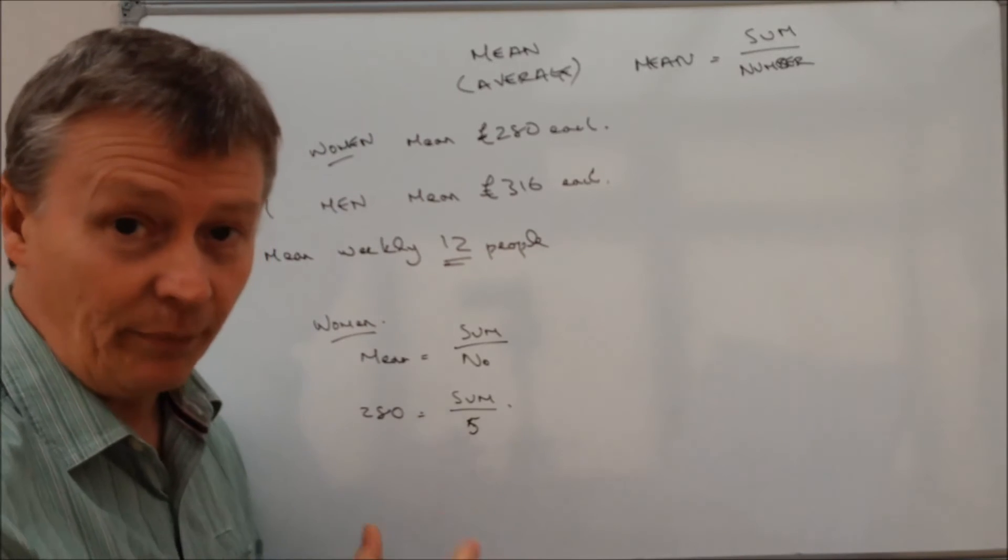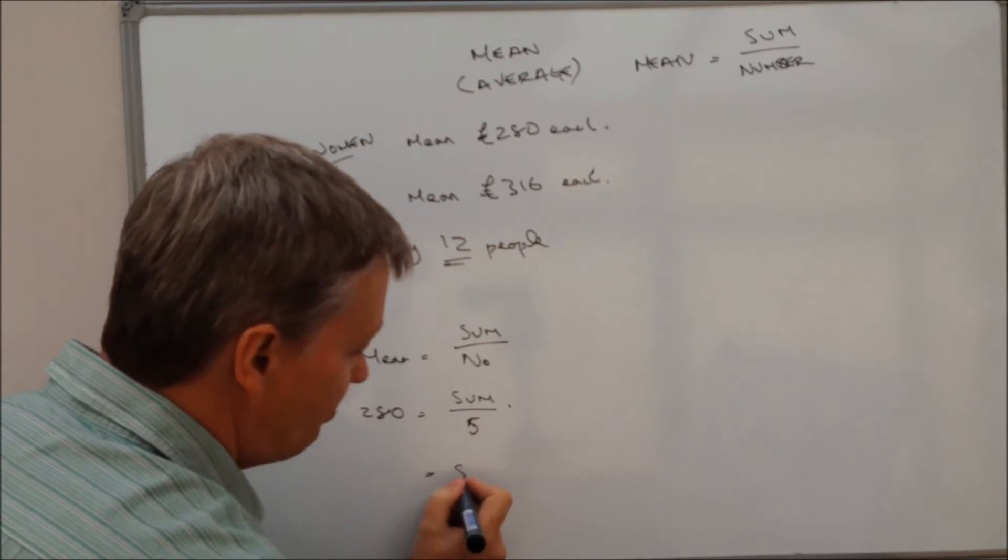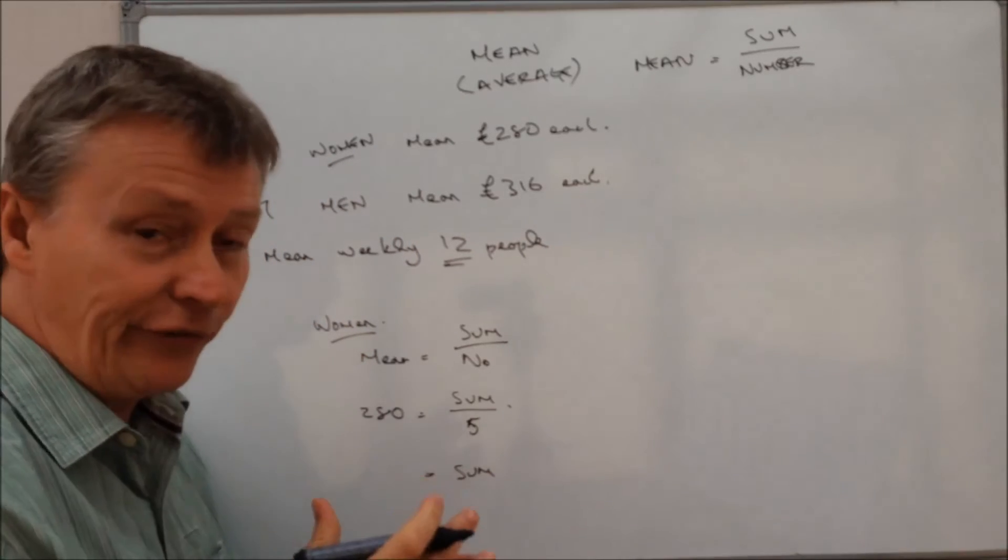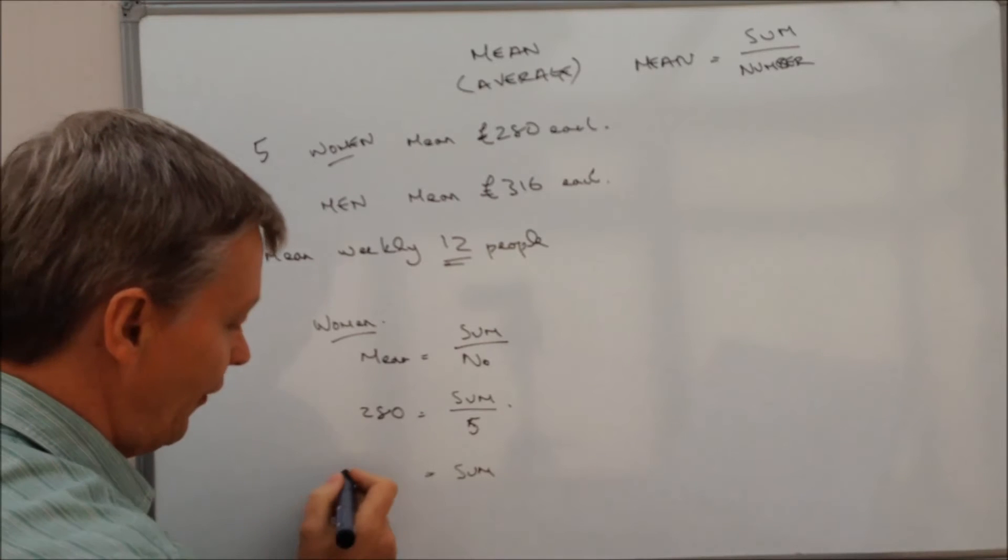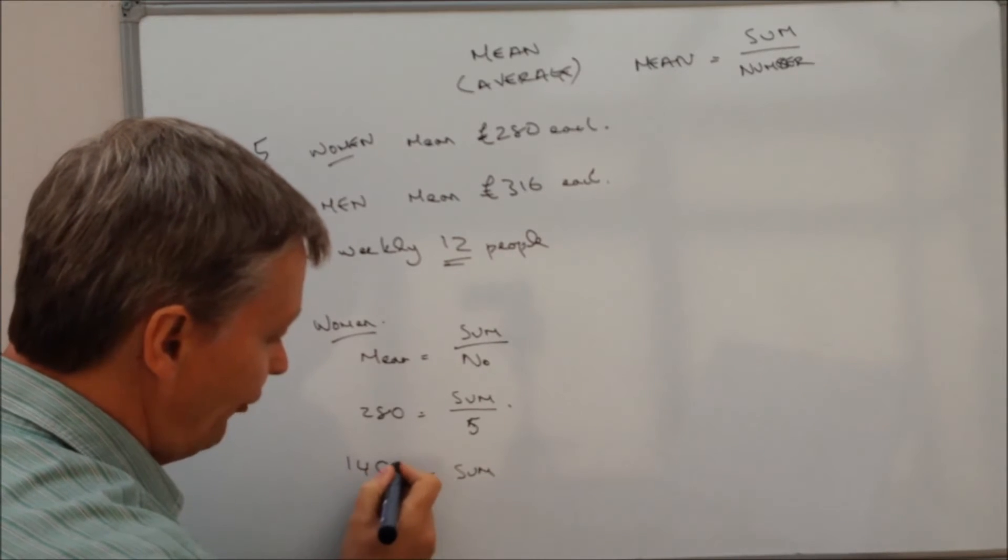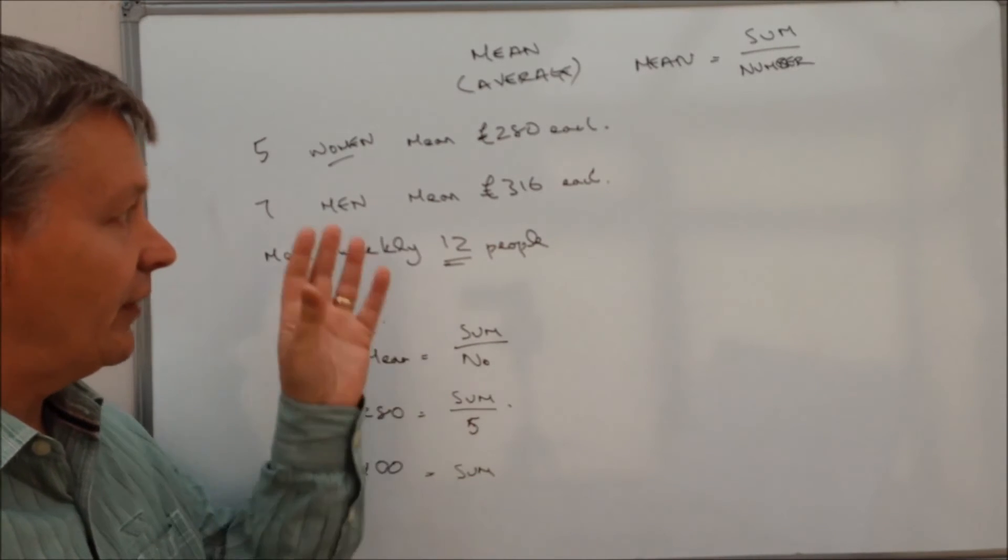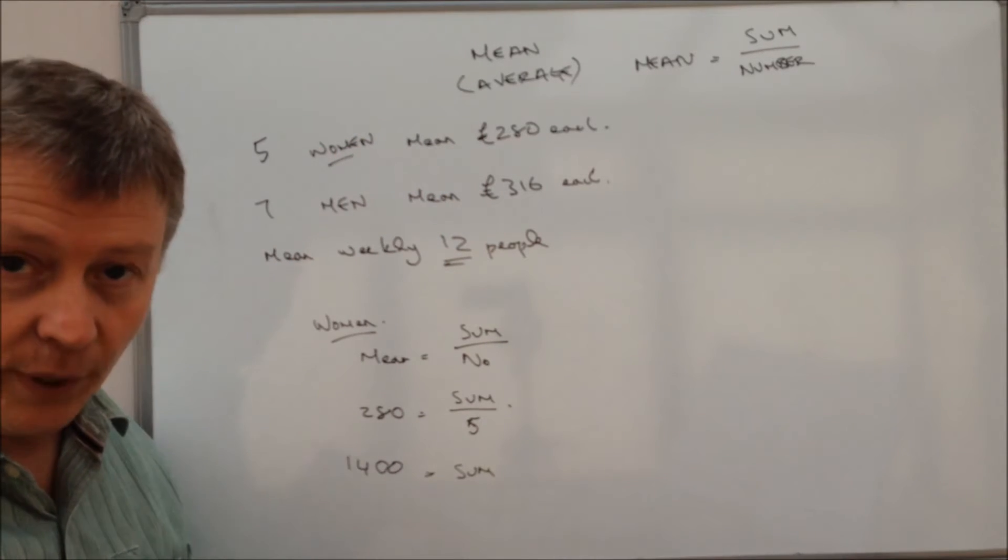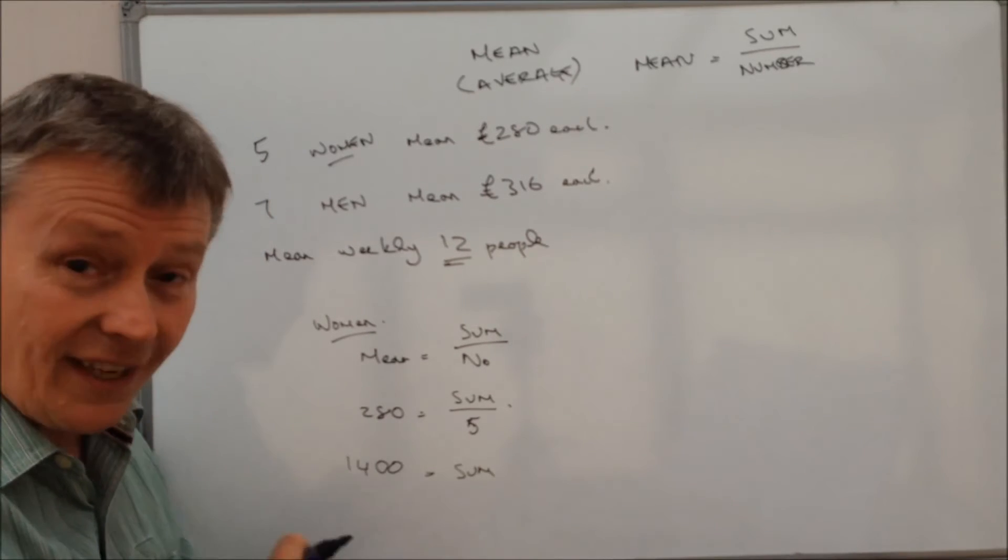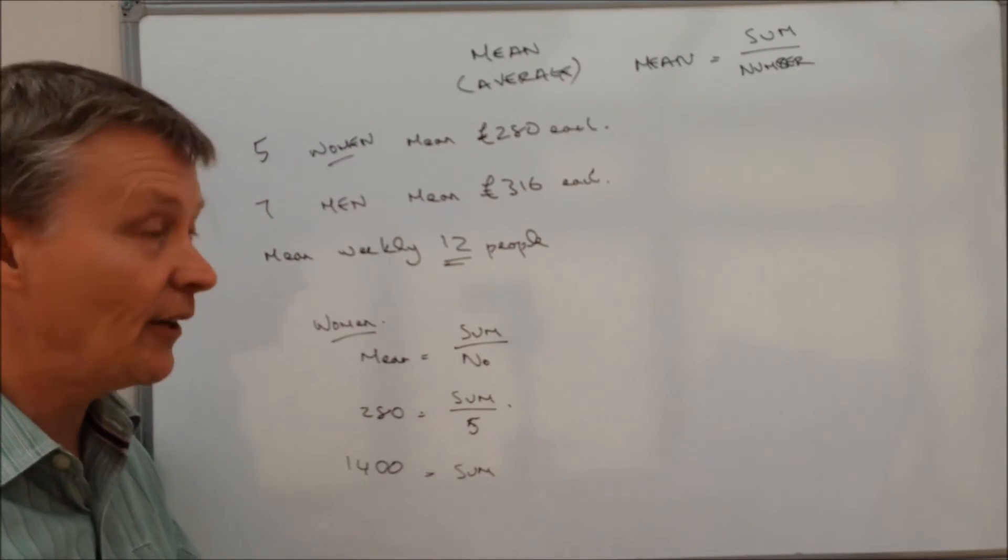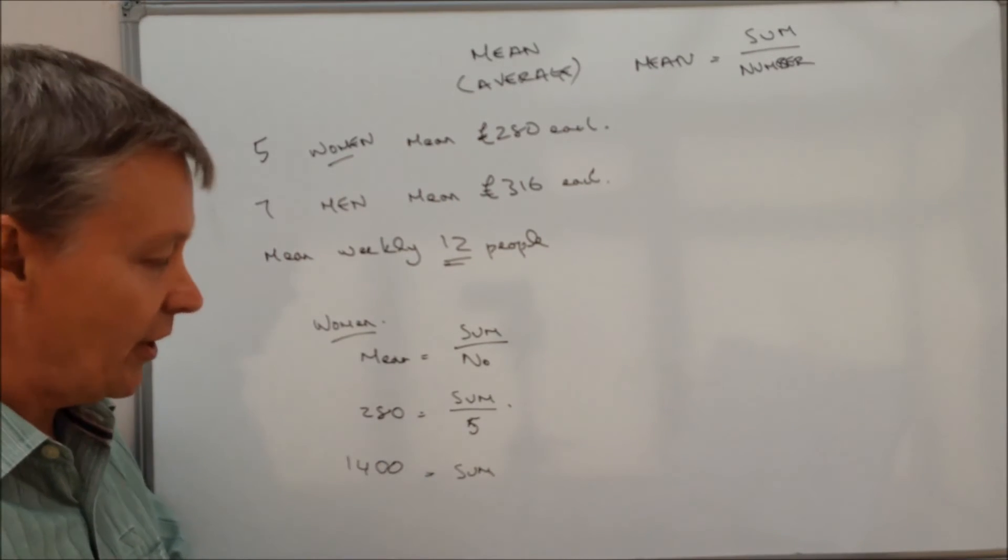So little bit of manipulation here. We can work out that the total wage bill for all the five women combined together is going to be 280 times five, which is 1400 pounds. So in other words, the person that these people work for is going to write out a check for 1400 pounds for their weekly wages.